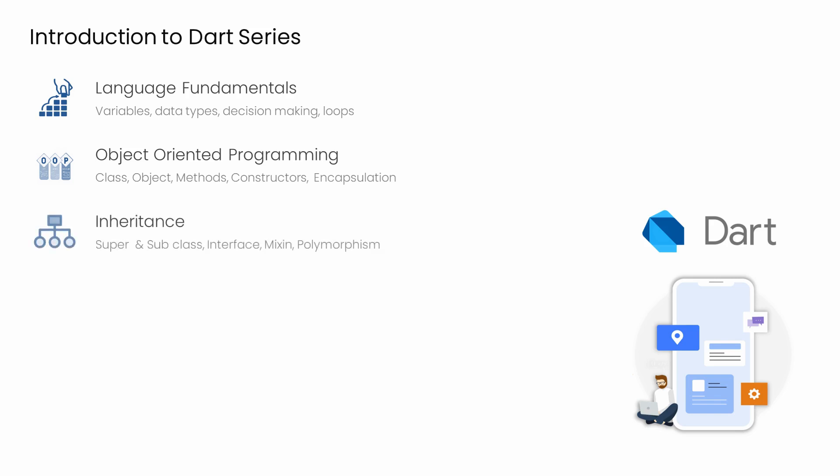Then we'll move on to inheritance. Here we'll understand the superclasses, subclasses, interface, abstract classes, mixins, and implementing polymorphism.